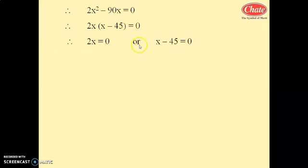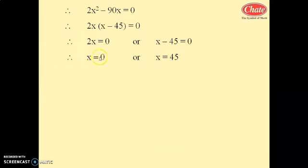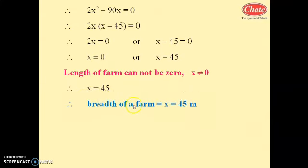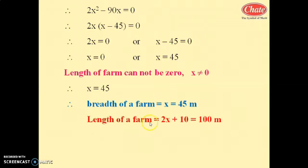Taking 2x common: 2x(x minus 45) equals 0. So 2x equals 0 or x minus 45 equals 0, giving x equals 0 or x equals 45. Since the length of the farm cannot be 0, we reject x equals 0. Therefore x equals 45 meters.